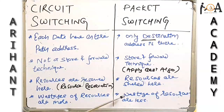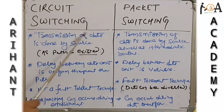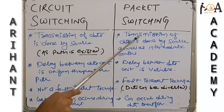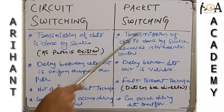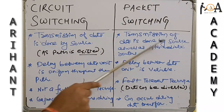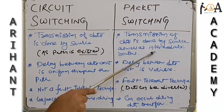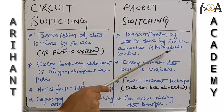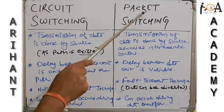In circuit switching, transmission of data is done by the source only, because a fixed path exists. Whereas in packet switching, transmission of data is done by the source as well as intermediate routers, because after the data is sent from the source, it goes to intermediate routers which find the optimal path and forward it to the next router toward the destination.